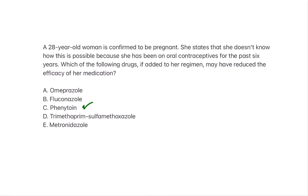The rest of those answer choices are inhibitors, so they would actually cause her contraceptive levels to go up. We typically don't see a presentation from an overdose of oral contraceptives, but as we'll see with inhibitors, there are substrates where overdose absolutely causes a presentation — too much warfarin causes bleeding, too much beta blocker causes hypotension and bradycardia. You need to memorize this and understand why inducers cause drug levels to drop and why inhibitors cause them to go up.